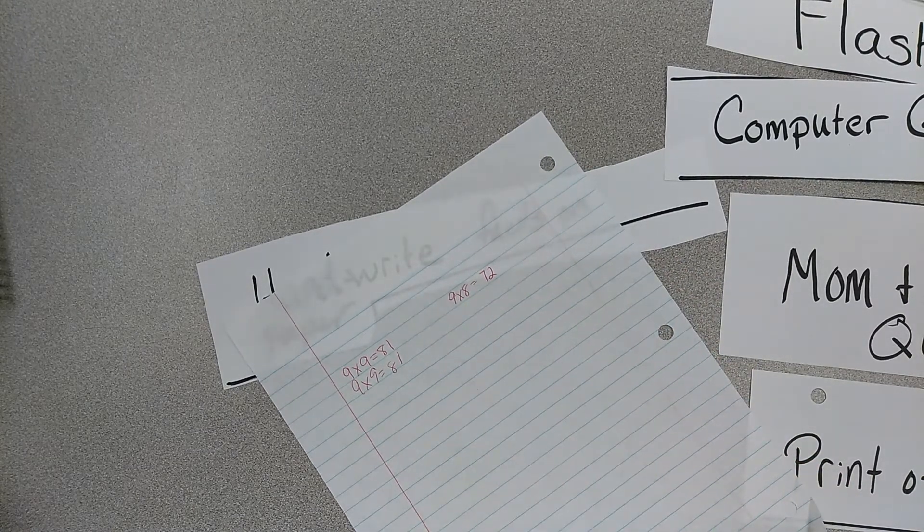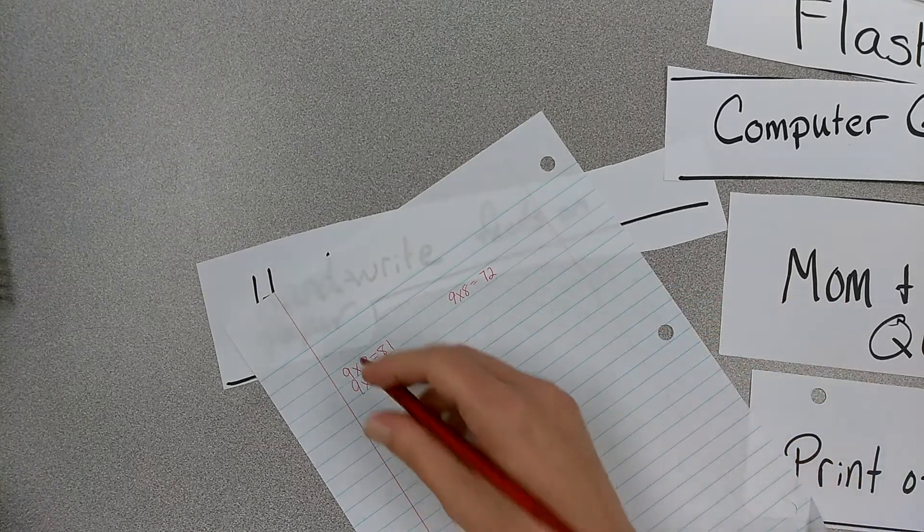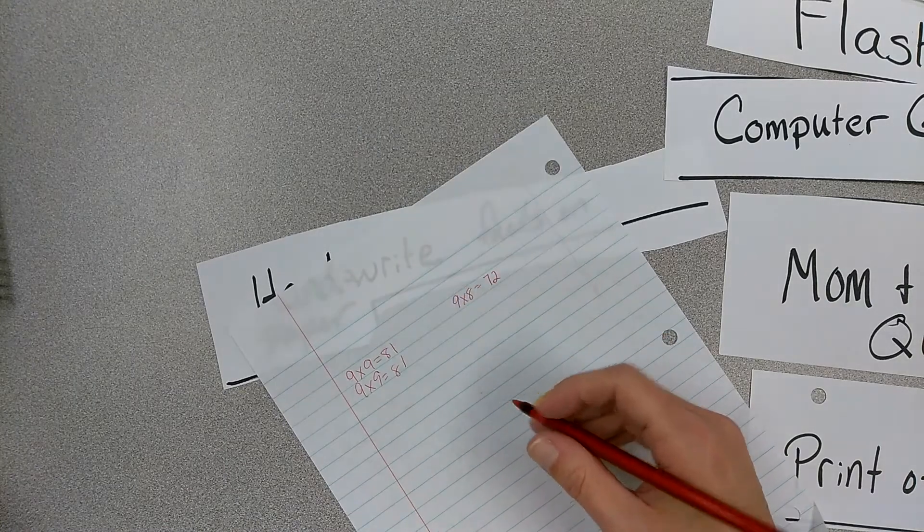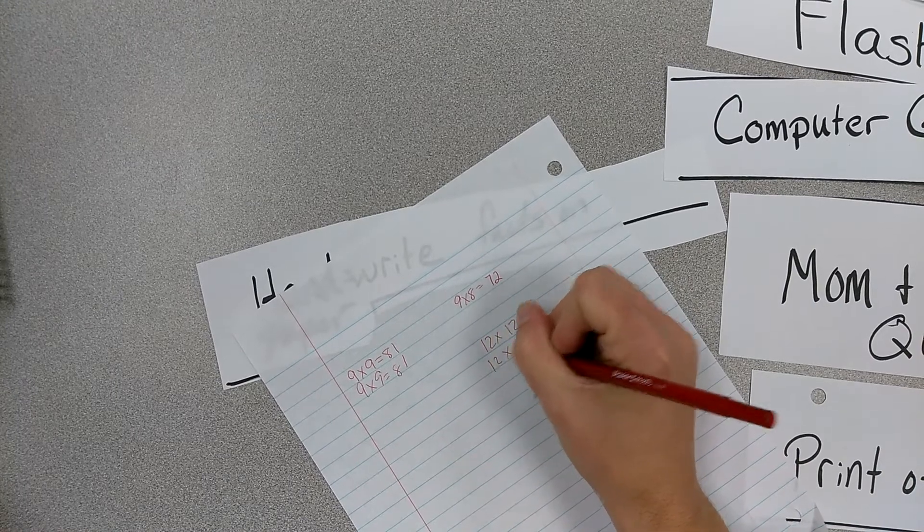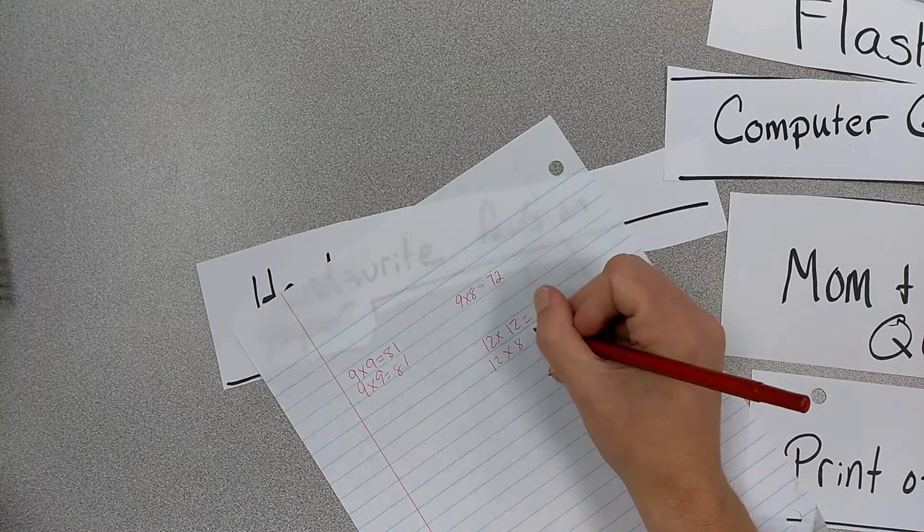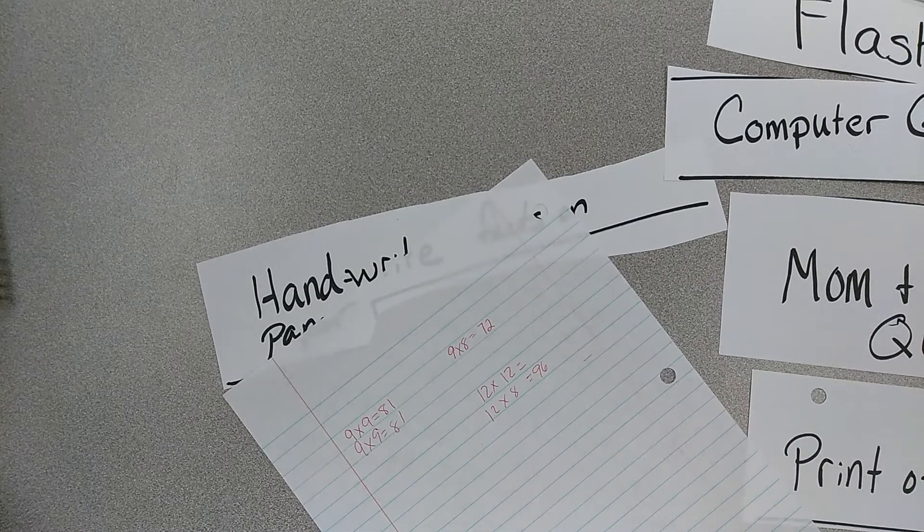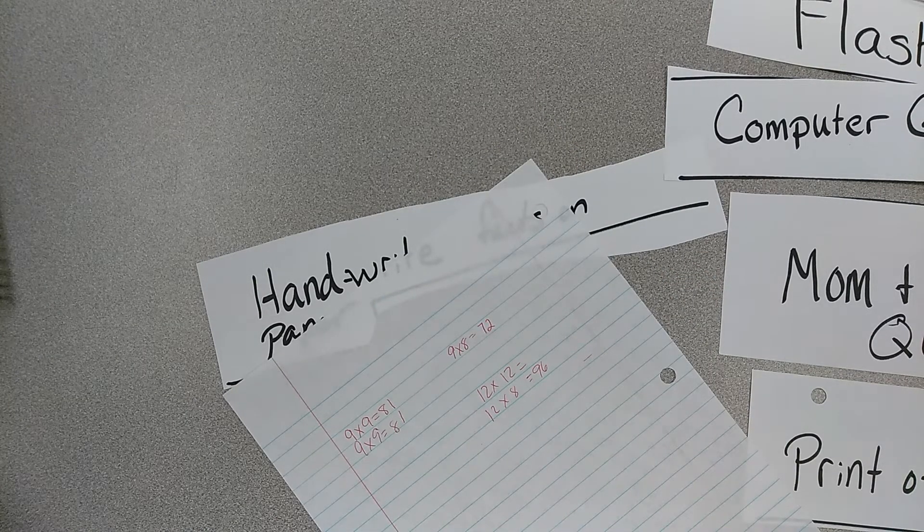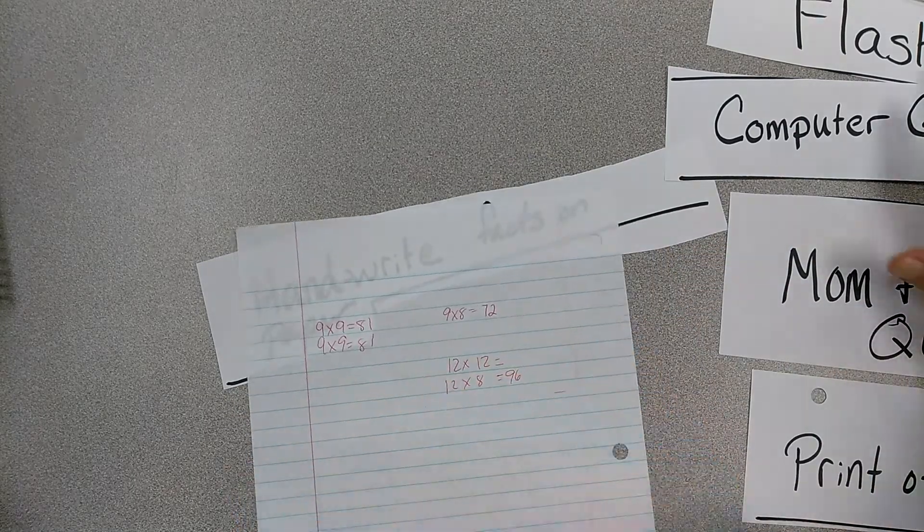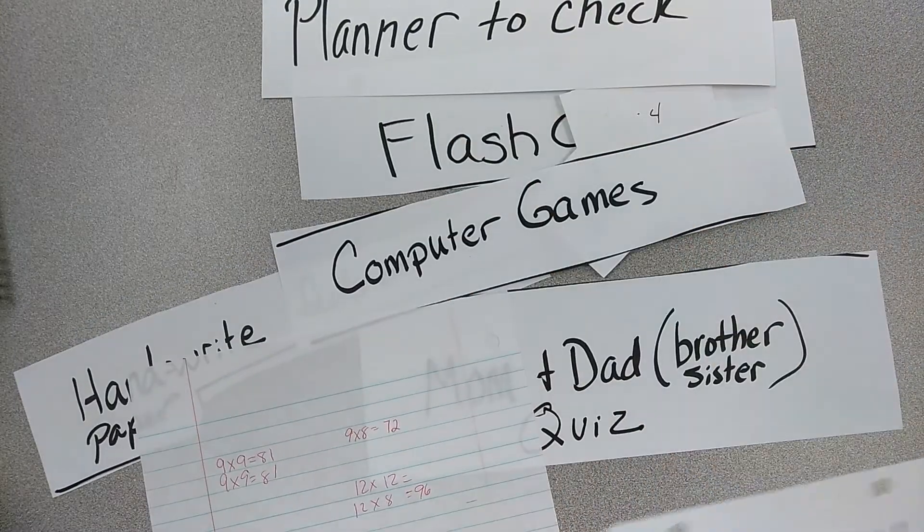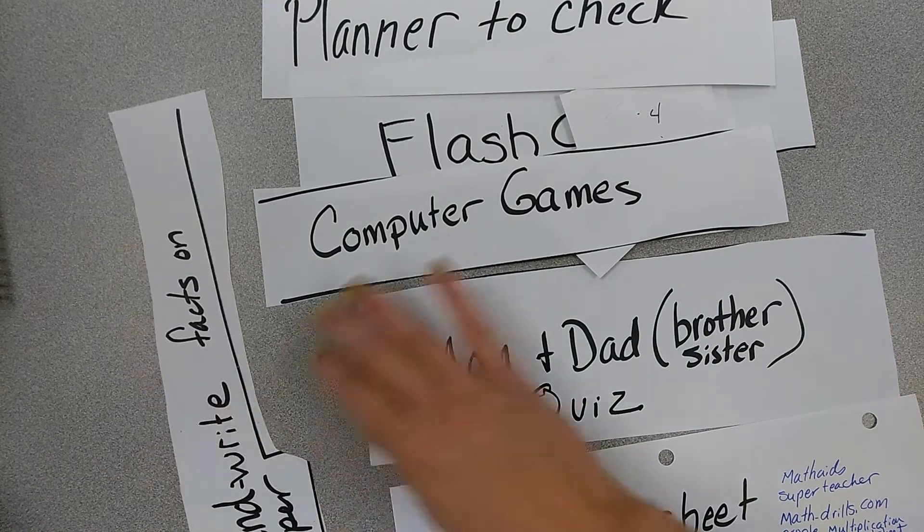And I would only do this with the ones that you really have a hard time with. Don't waste your time with two times two is four. But if you want to make big, long rows of those, 12 times 12, 12 times 8, you know, 96. 12 times 8, 96. 12 times 8, 96. Repetition is good when you're trying to memorize something. We don't always memorize, but multiplication is important to memorize. And I've given you a lot of ways. There's a lot of ways here to work through the multiplication and not make it so boring.